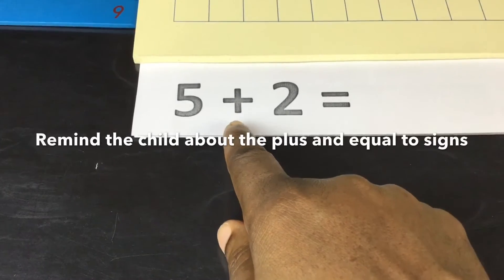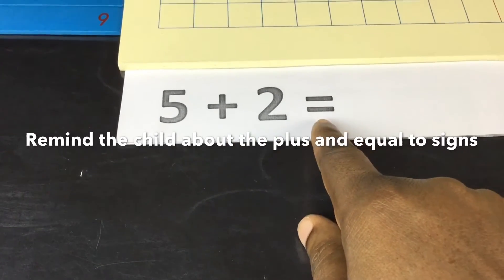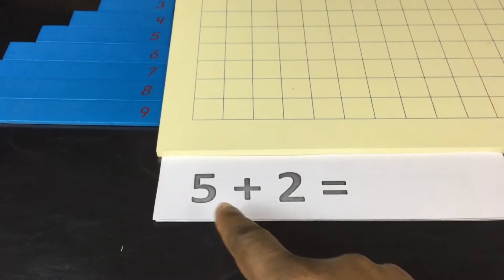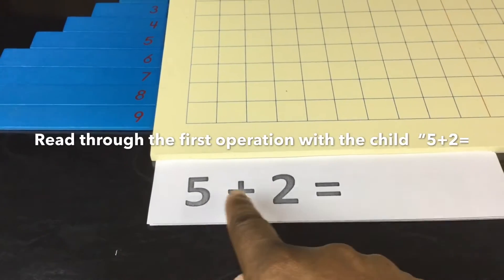Remind the child about the plus and equal to signs. Read through the first operation with the child. Five plus two equals...